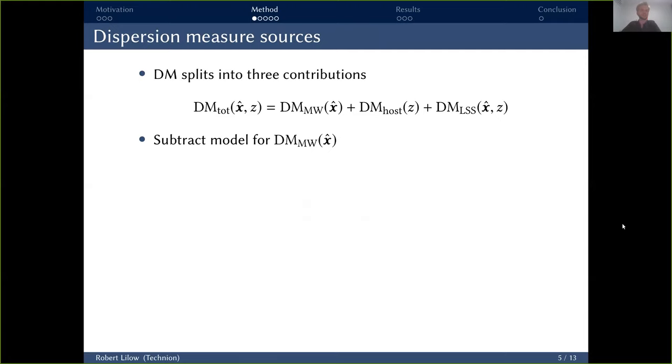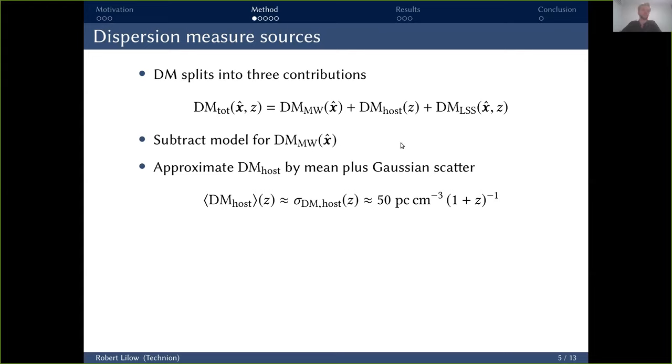And to understand that, let us first discuss the different sources that enter the dispersion measure. Basically, you can split into three contributions. First of all, there's the contribution of dispersion just within our own Milky Way. This depends on the angle, just because that affects the amount of ionized gas that the signal is traveling through. However, there are models for this Milky Way contribution, and for our forecast here, we assume that these can just be subtracted so that we only have to deal with the other two contributions.